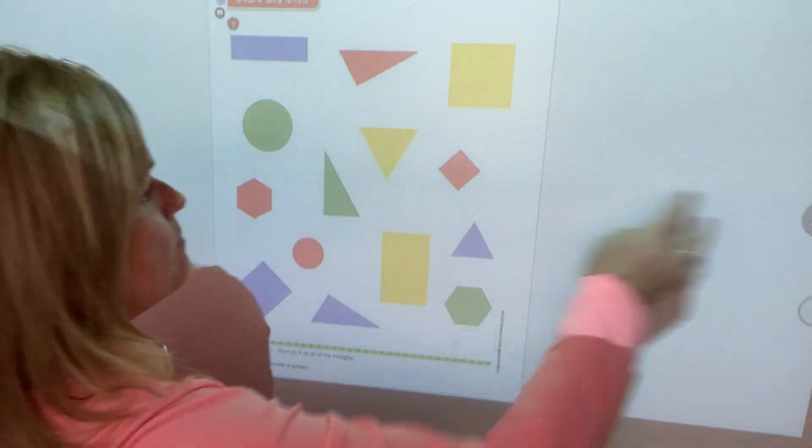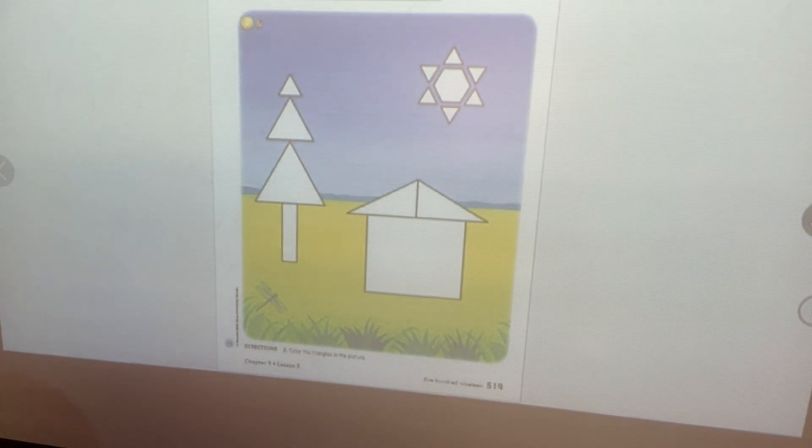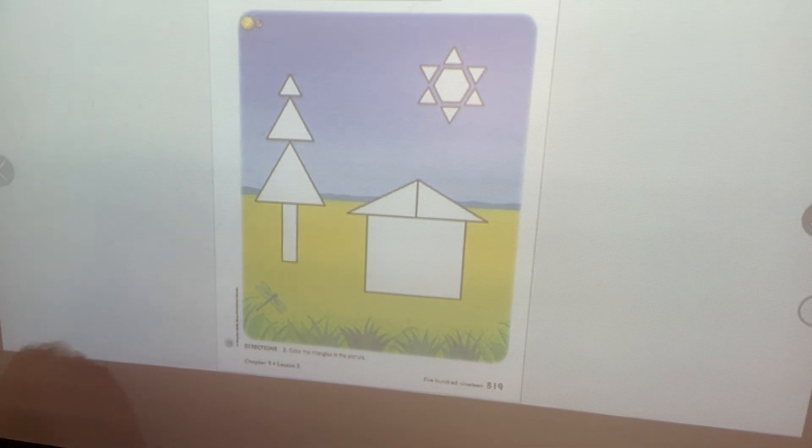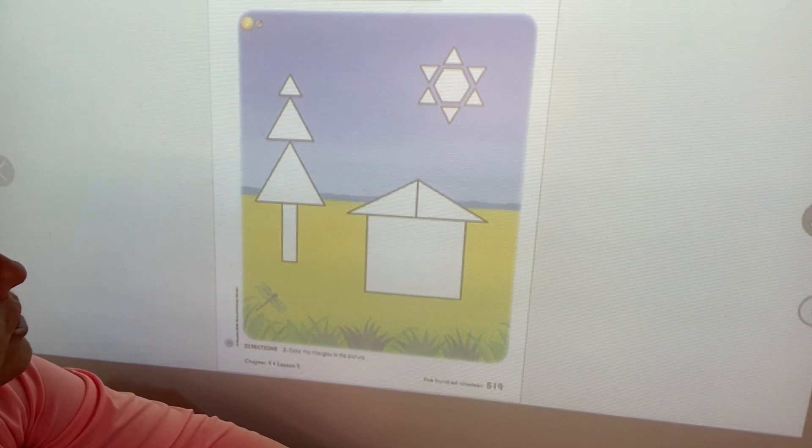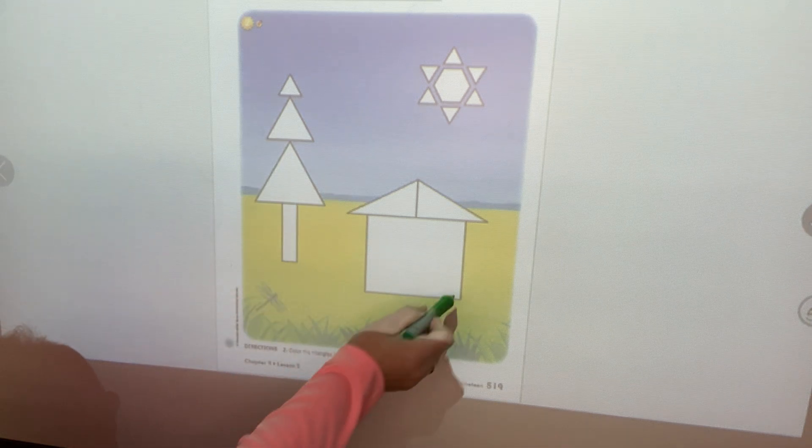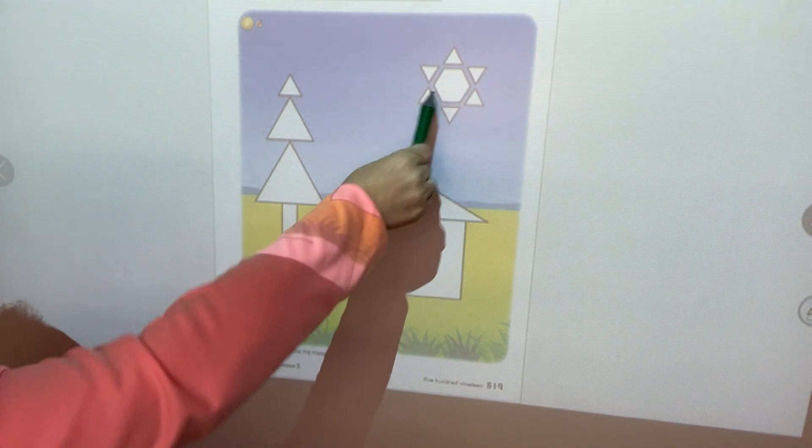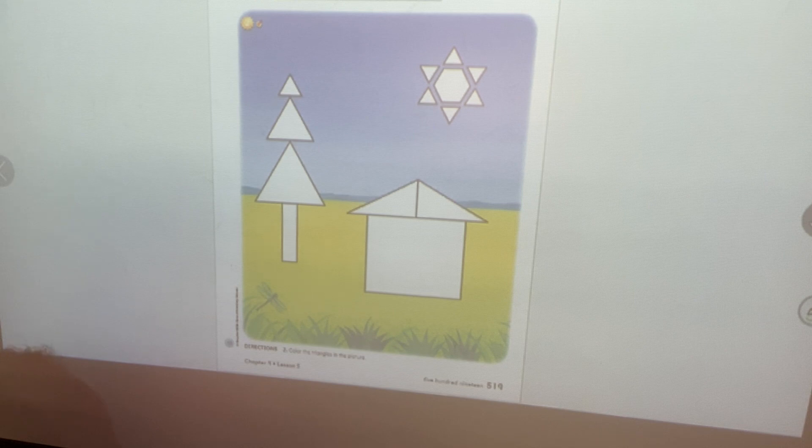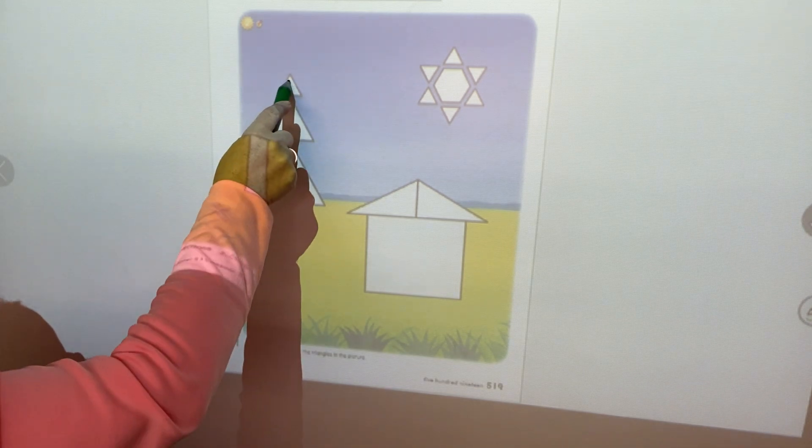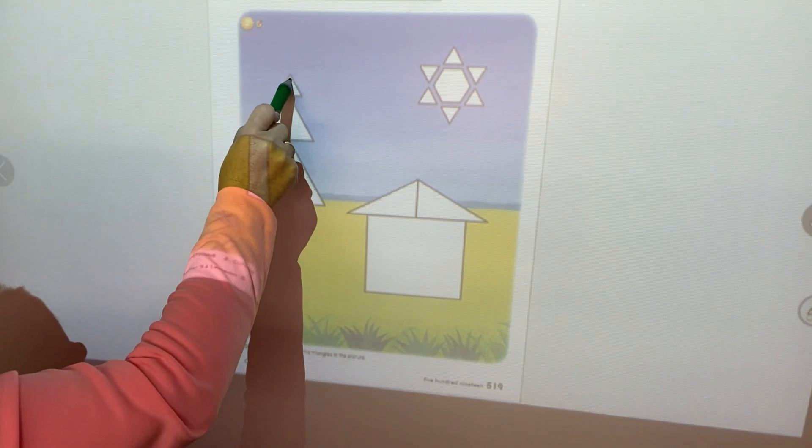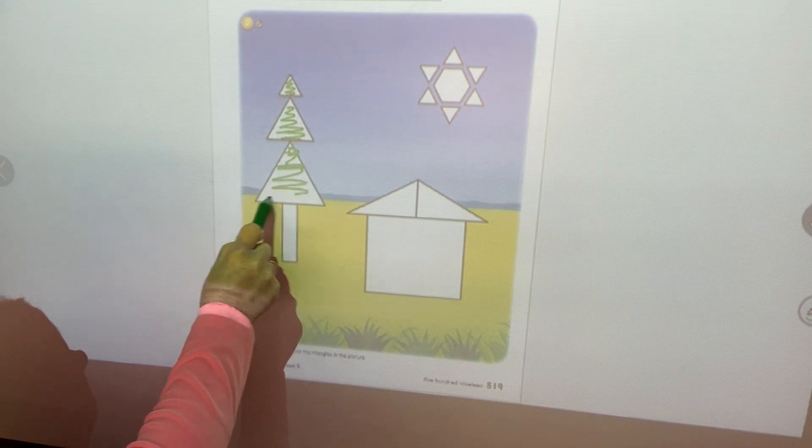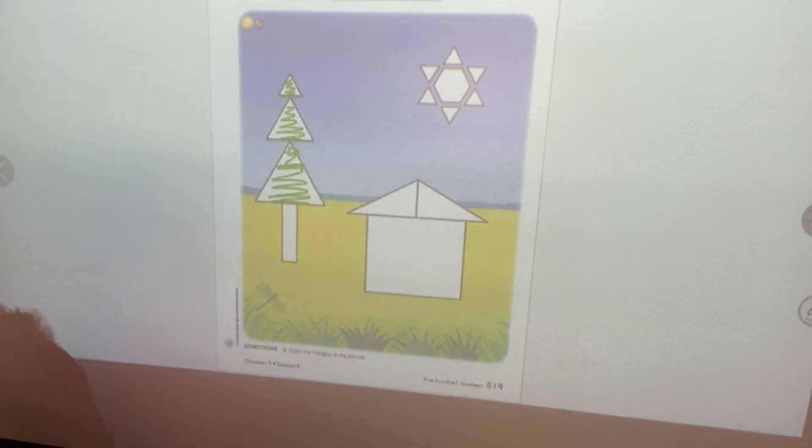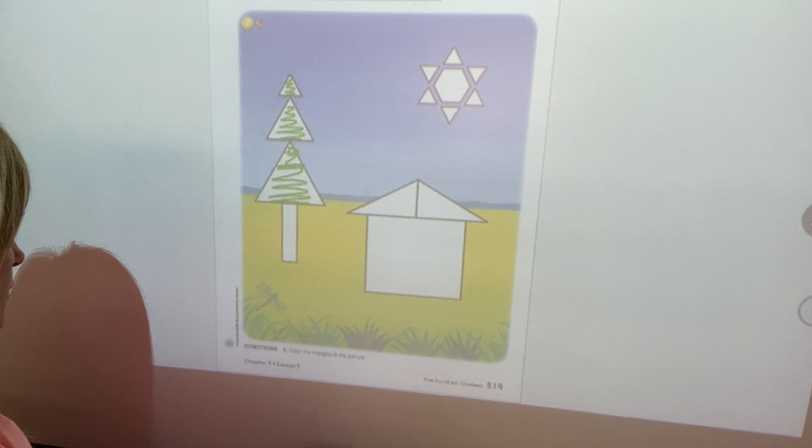On this page, this is where you're going to identify and color all of the triangles. Three sides and three points. This is kind of a cool picture. I spy a tree and a house and the sun. And look at that shape in the middle of the sun. That is a six-sided shape called a hexagon. So there are three triangles here. So go ahead and color in your tree. All three of those shapes are triangles. This would be a rectangle, so we're not going to color that. You can use different colors if you'd like.